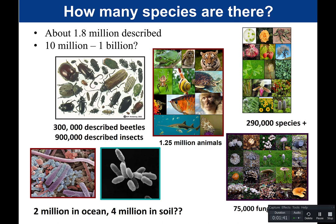The average hand harbors 150 species of bacteria, and the left and right hand share only about 17% of the same bacteria — women tend to have more bacterial types. In a single gram of soil, we can have 10,000 species of bacteria. Even in the deep ocean, there can be 20,000 different species in one liter of seawater.